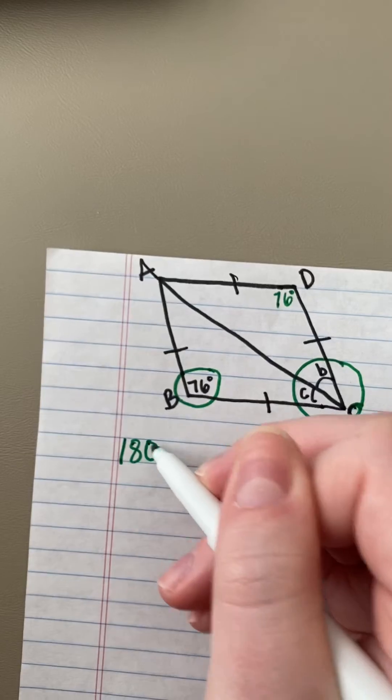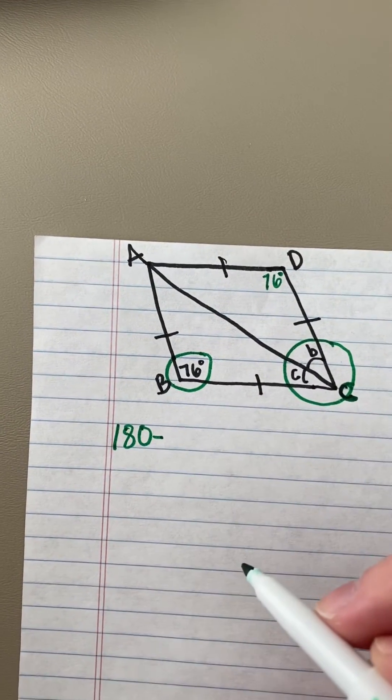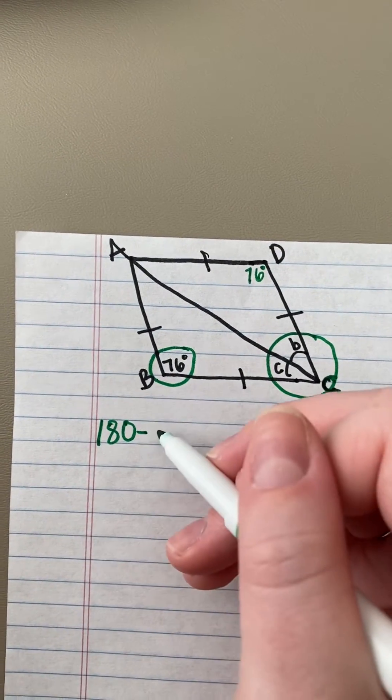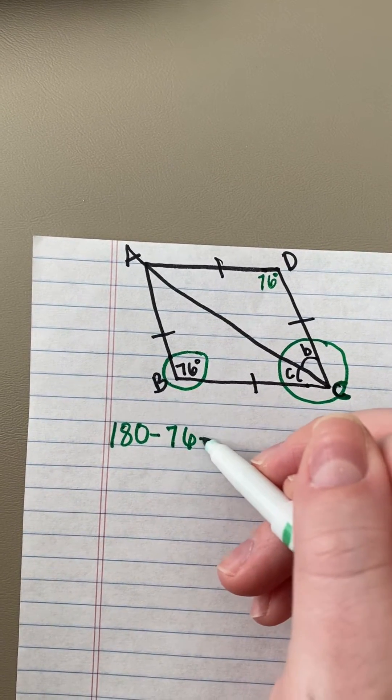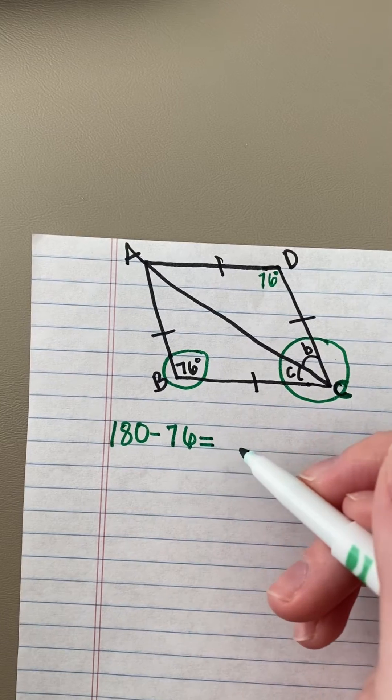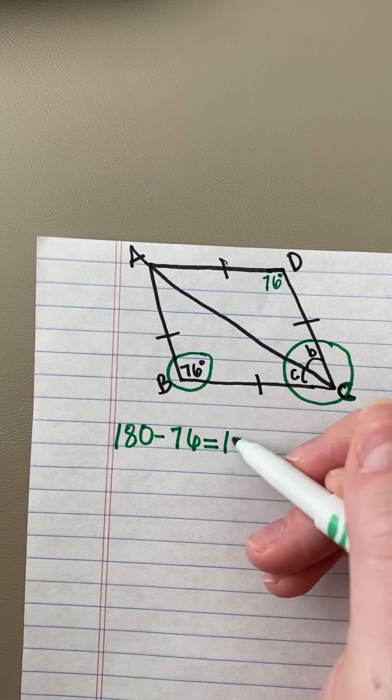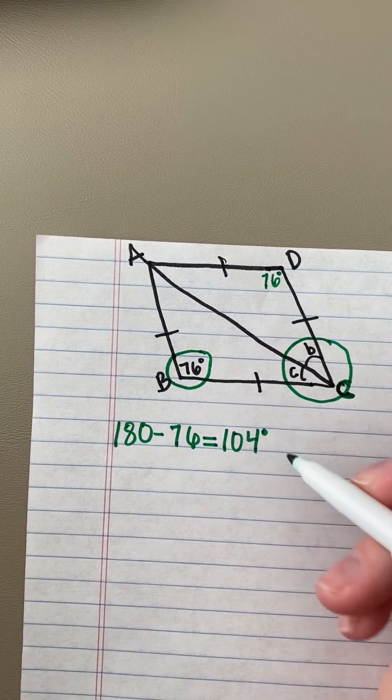So first, I need to figure out what this big angle capital C is. So in order to do that, I'm going to use my properties of parallelograms and rhombuses, and subtract 180 and take 76 degrees away from that. And when I do that, I get a difference of 104 degrees.